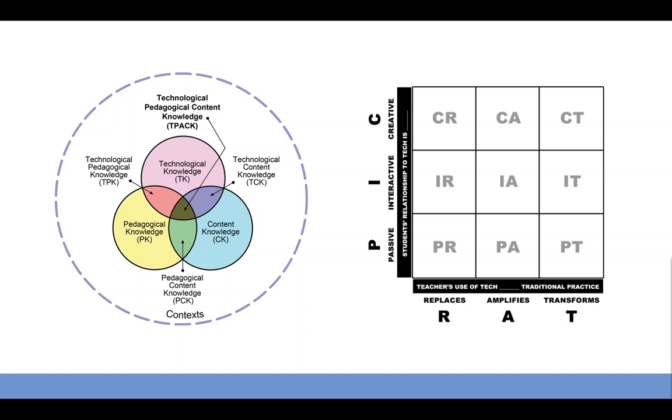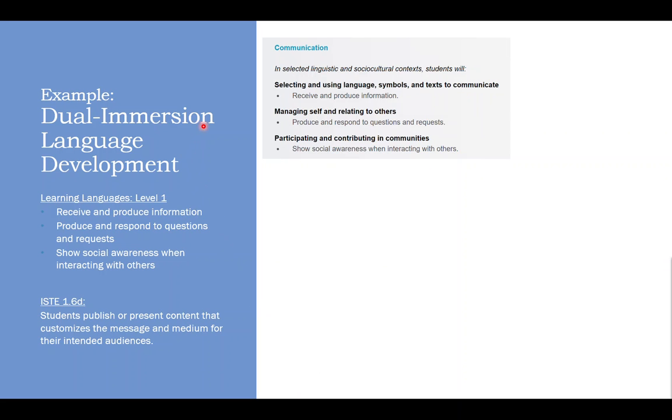Now I'm going to show you the next example. And this is based on something a student in Curriculum 5018 did one term. So this is a dual immersion language development, which again, I'm not an expert in, but I have a little bit of background. And I chose learning languages level one. This is what it looks like on the New Zealand site. That students can select and use language to communicate, produce and respond to questions and requests and show social awareness when interacting with others. That's the content stuff, disciplinary stuff I want them to learn.